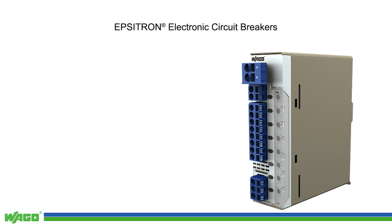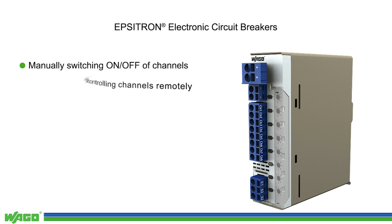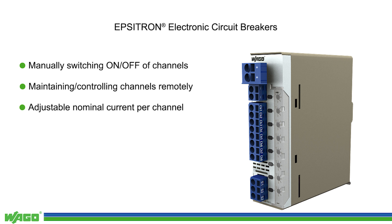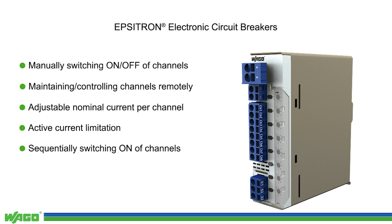In summary, WAGO's ECBs provide multiple functionalities guaranteeing reliable, intelligent, and highly effective protection for your systems. The signal outputs enable remote status diagnostics for each individual channel. Individual adjustability guarantees extremely precise tripping operation. Active current limitation prevents the power supply from switching to overload operation and prevents a voltage drop. Sequential switching on of the inputs also minimizes inrush current summation. Finally, plugable connection technology simplifies both wiring and maintenance. WAGO's line of ECBs offers high-performance devices that have been engineered to meet your needs.